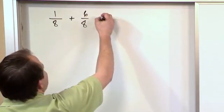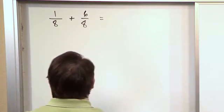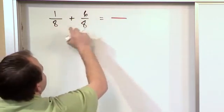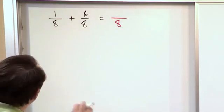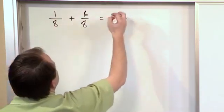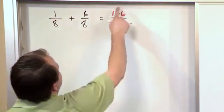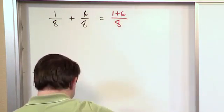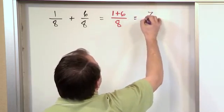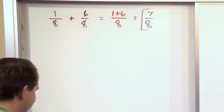Now when that is the case, what you do is you simply keep the number on the bottom. So you do not add 8 plus 8, you simply keep the number 8 on the bottom. You don't add them, you just keep it and on the top what you do is you add the numerator. So what you have on the top is 1 plus 6. 1 plus 6 you all should know is 7 and the bottom is 8. So the answer to this fraction addition is 7/8.